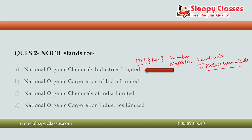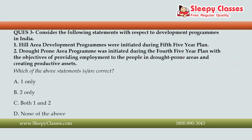The next question asks you to consider the following statements with respect to development programs in India. First, Hill Area Development Programs were initiated during the 5th Five Year Plan. Second, the Drought Prone Area Program was initiated during the 4th Five Year Plan with the objective of providing employment to people in drought prone areas and creating productive assets. Which statements are correct? The correct answer is Option C, that is both 1 and 2 — both statements are correct.